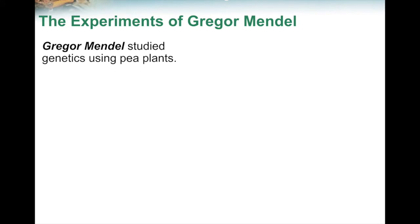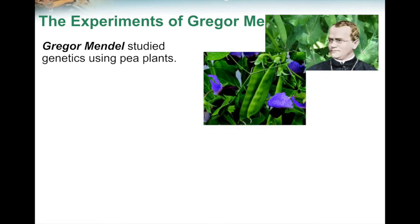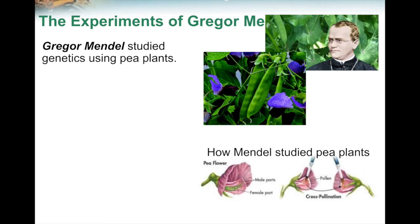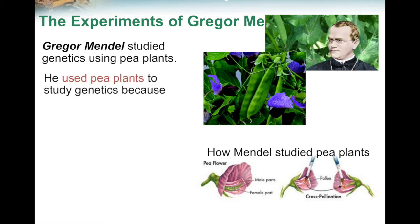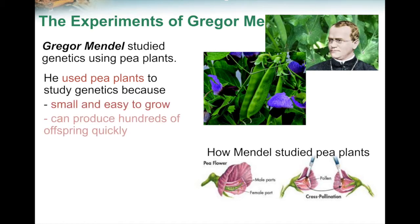A man named Gregor Mendel was interested in how parents passed their traits on to their offspring, so he used pea plants to see how traits were passed on. He used a paintbrush to collect the pollen from one flower, then brushed the pollen onto the ovary of a different flower. Then he waited for new flowers or offspring to grow to see what traits they would have. Why did he use pea plants? They're small and easy to grow, they can produce lots of offspring pretty quickly, and they only had seven traits that made them different from each other.